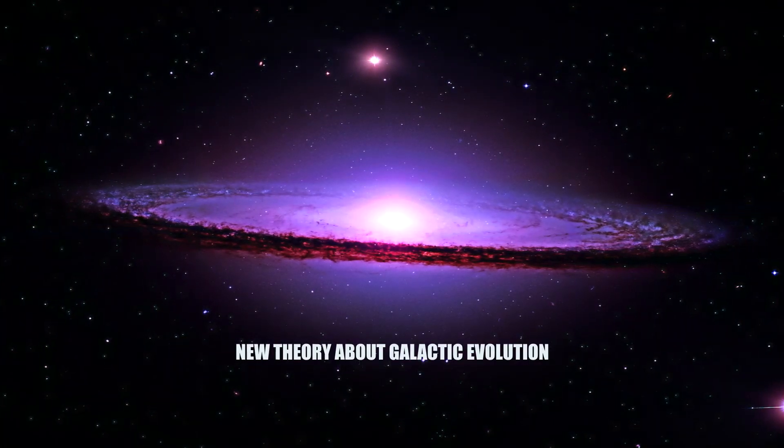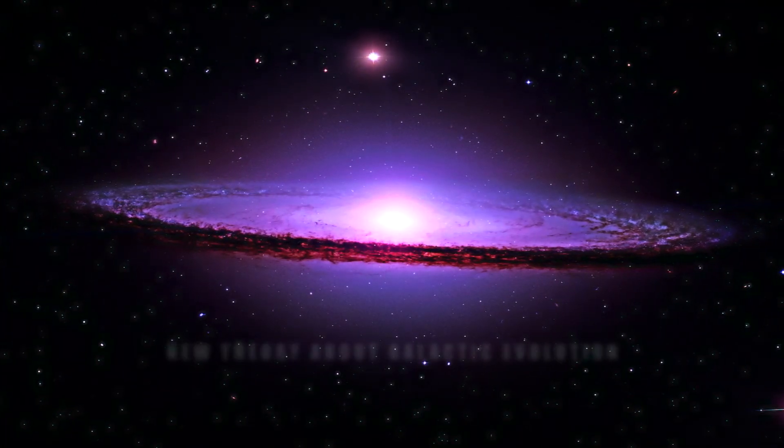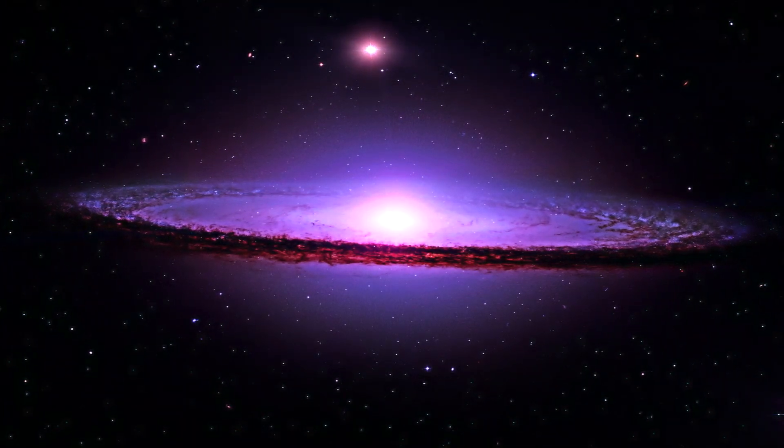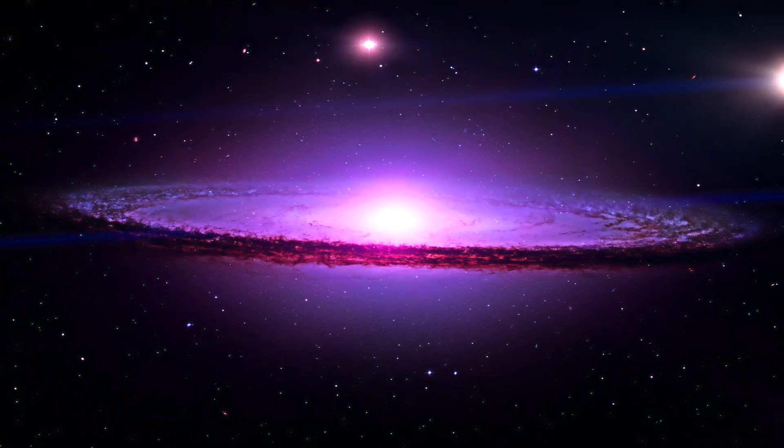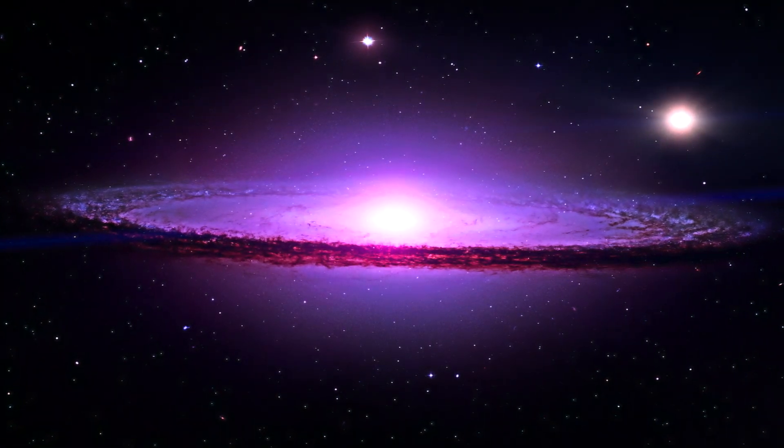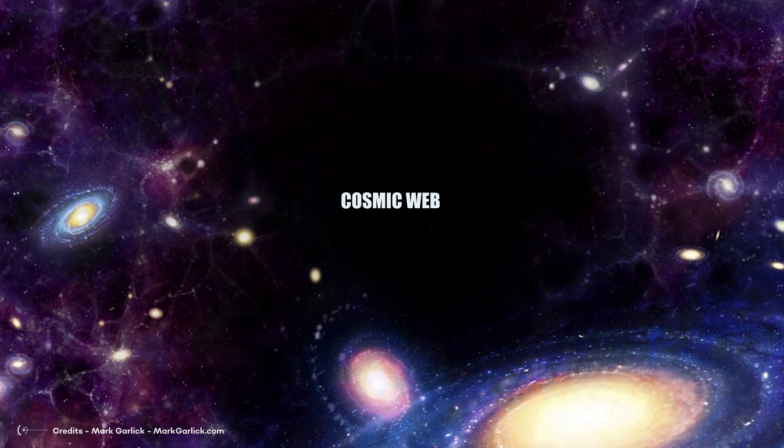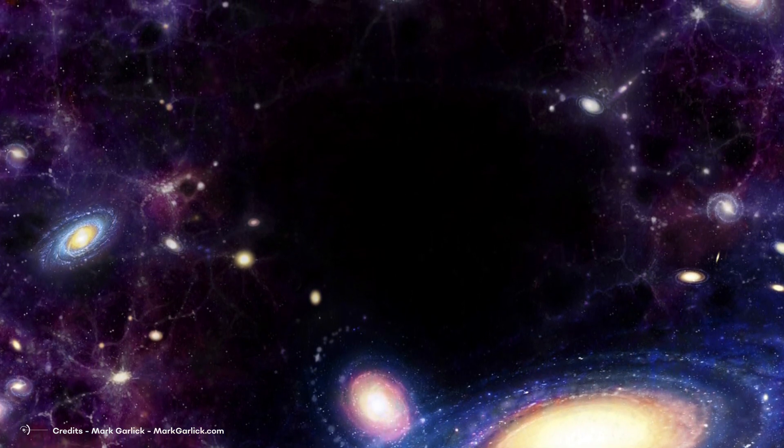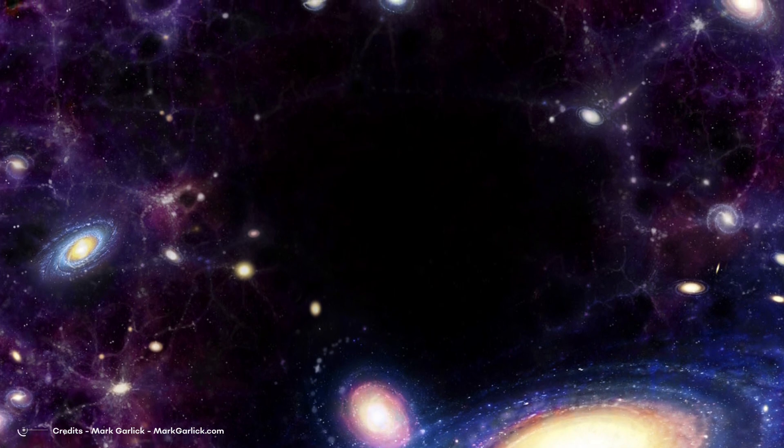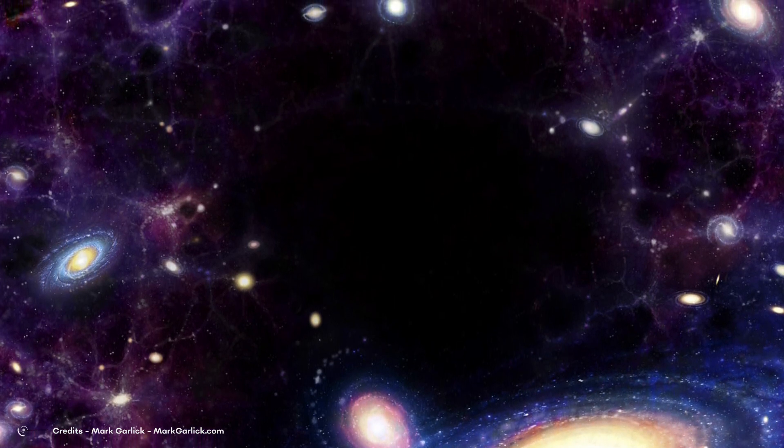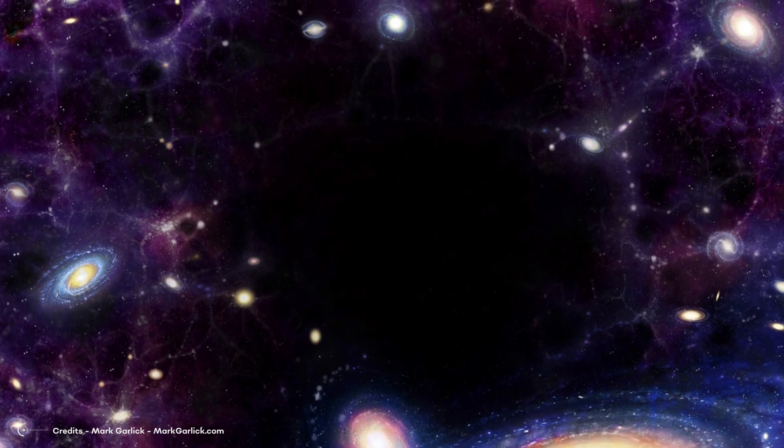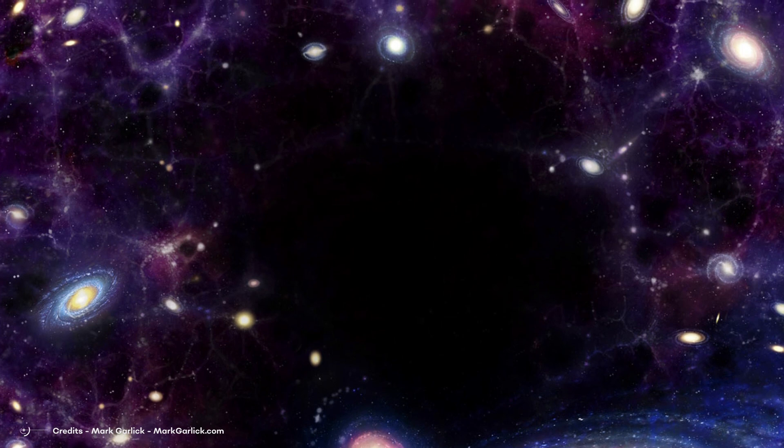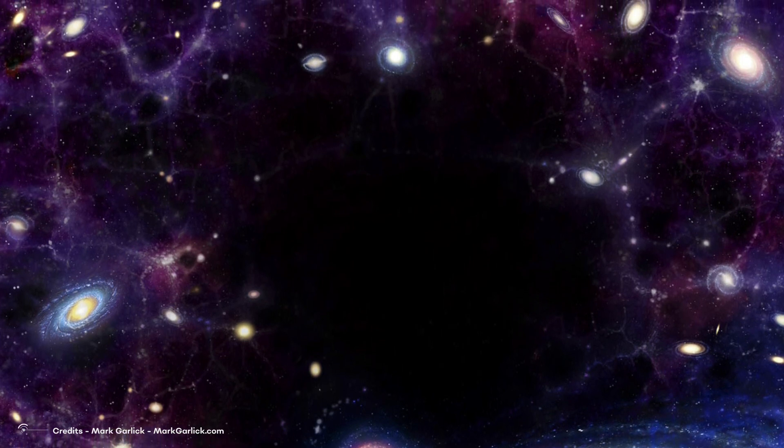New theory about galactic evolution. So how are these massive galaxies able to form so quickly? It turns out they are able to do so by tapping into the cosmic web. What is that? Just like any web, the cosmic web is a network of dark matter and gas that permeates the universe. The gravity of the dark matter in the web attracts gas, causing it to collapse and form structures. These structures eventually grow into massive galaxies, with the dark matter providing the scaffolding for the galaxy to form around it.